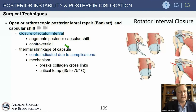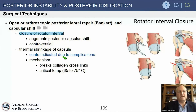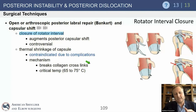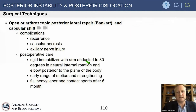Thermal shrinkage is historical and now contraindicated due to many complications. The idea was to shrink collagen by breaking and relinking cross-links, but the tissue was irreversibly damaged, the capsule became a major problem, and results were not comparable to a classic Bankart-type repair.